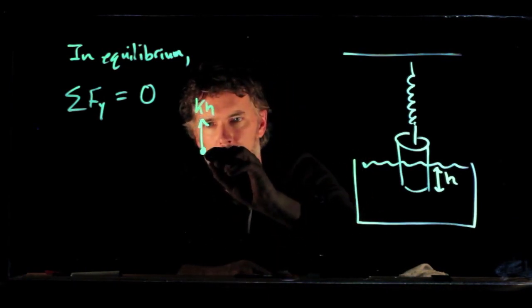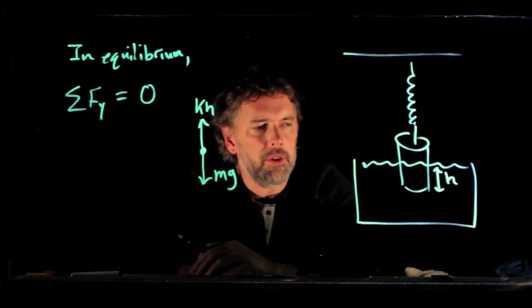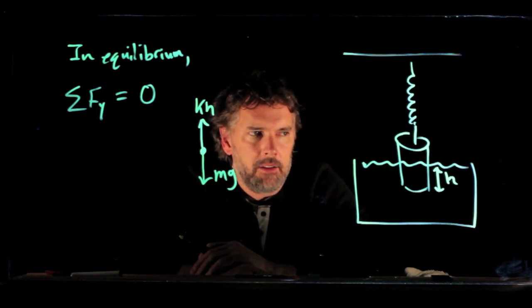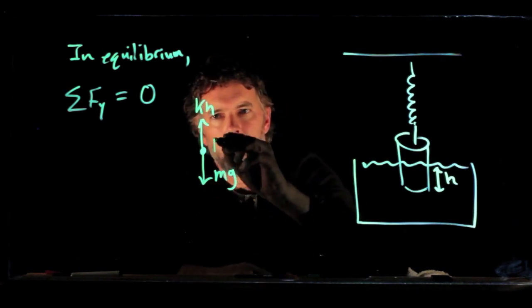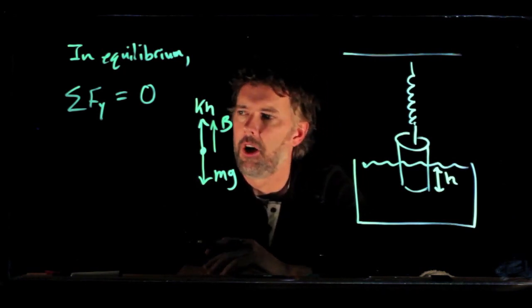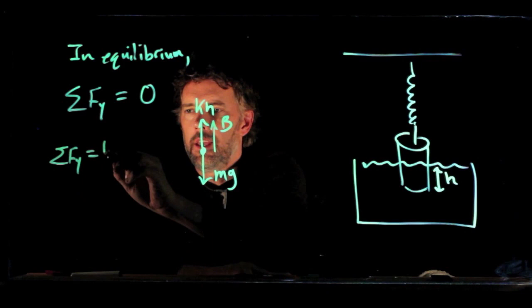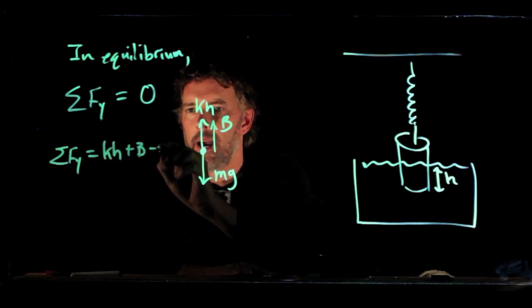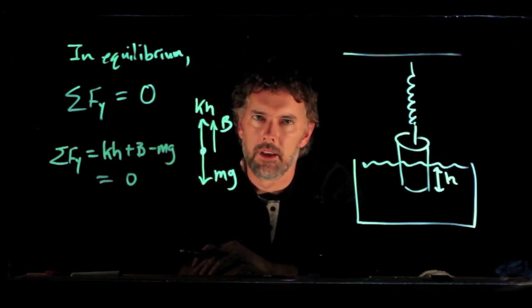What else is acting on the cylinder? Gravity is, of course, acting down on the cylinder, trying to pull it towards the earth. And there's one more thing that's acting on the cylinder, and that is the buoyant force up from the water. Okay, so what are the sum of the forces? It is kh plus b minus mg. All of that has to equal zero.